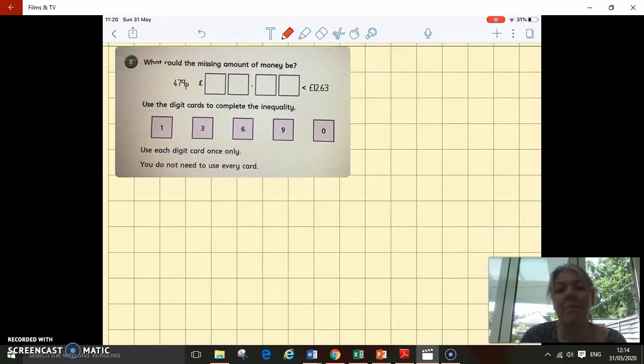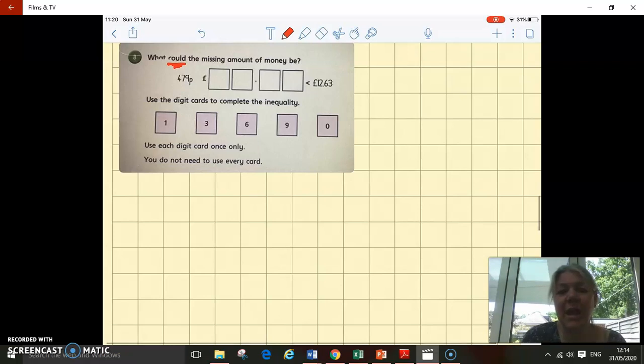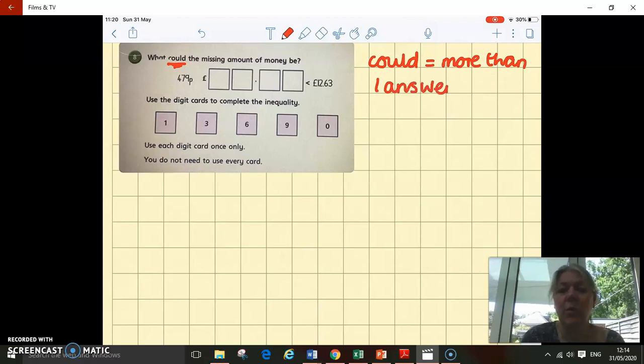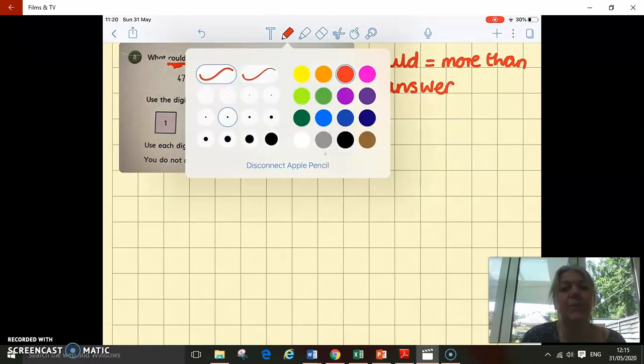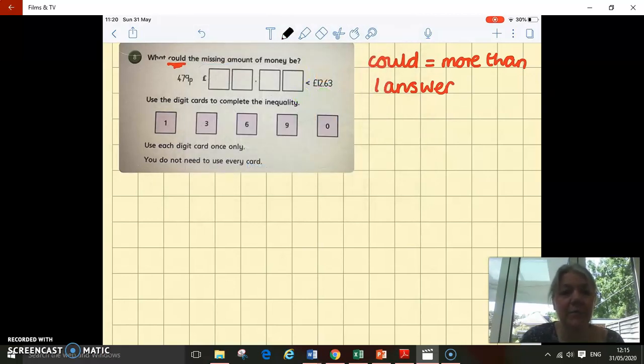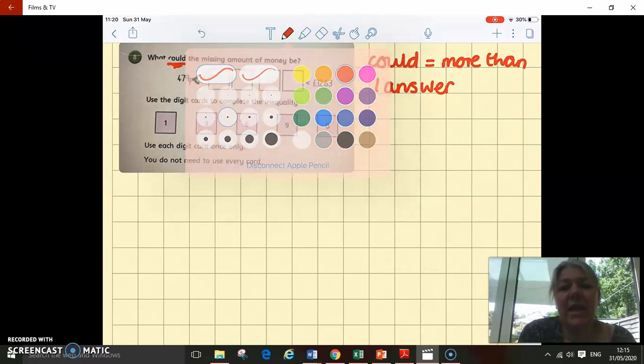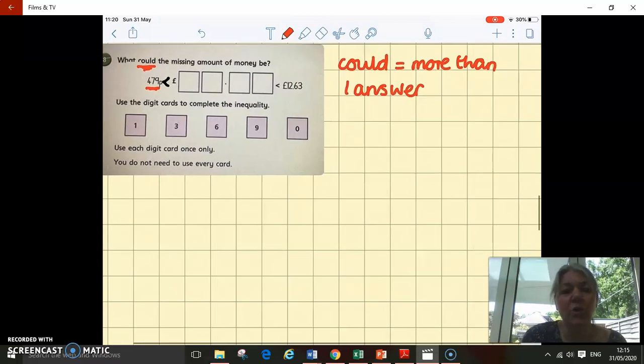We've got: what could the missing amount of money be? And we've got two figures there. We've got this word 'could' again. Remember from session one, could means there's more than one possible solution. And we're going to use some digit cards. I've been a bit sneaky, I've changed the numbers. So we've got 479 pence here.